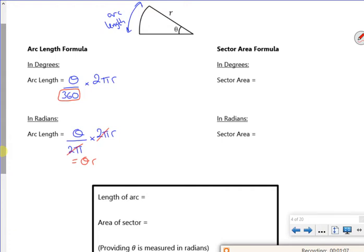We tend to write it though as r times by θ, so I'll just put that in the box down there. So that's your arc length.